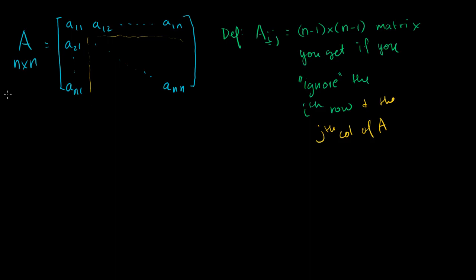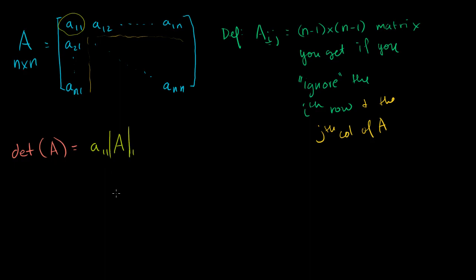With that out of the way, we can create a definition — and it might seem a little circular at first, and on some level it is. We're going to define the determinant of A. It's actually a recursive definition. It's equal to: A(1,1) times the determinant of its submatrix A(1,1), then we switch signs. So it's A(1,1) times the determinant of the submatrix A(1,1).